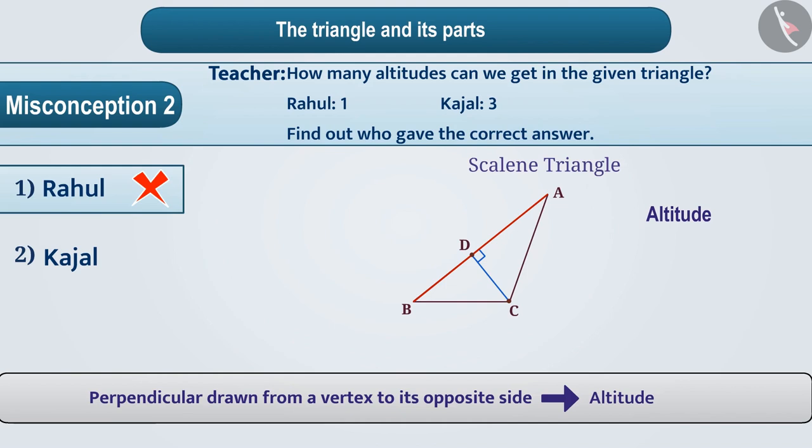The correct understanding is that the altitudes can be inside the triangle and also outside. For example, if the side BC is extended here, an altitude can be made from the vertex A in the same way. Similarly, if the side AC is extended, an altitude can be made from the vertex B in this way.